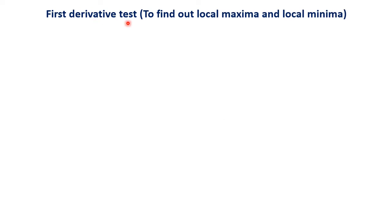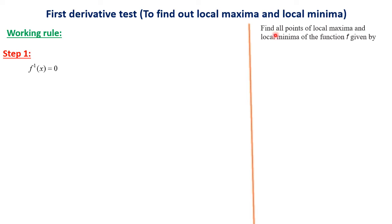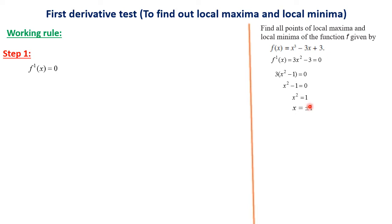Next we shall discuss the first derivative test, used to find local maxima and local minimum. Working rule: Step 1 is to equate f'(x) = 0. For example, find the points of local maxima and local minimum of f(x) = x³ − 3x + 3. Taking the derivative: f'(x) = 3x² − 3. Setting equal to 0: 3(x² − 1) = 0, so x² = 1, giving x = ±1. These are our extreme points.